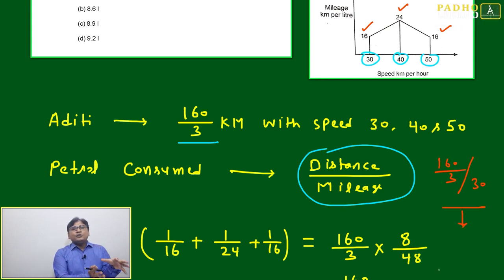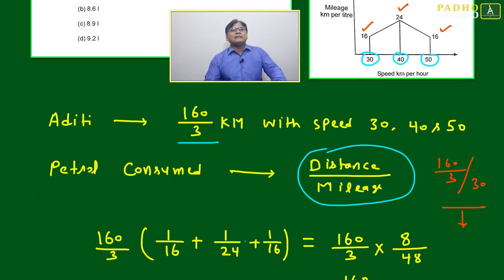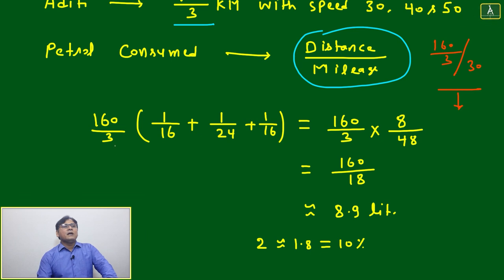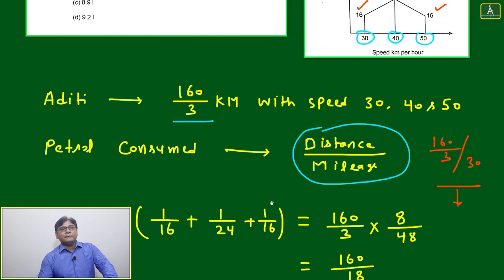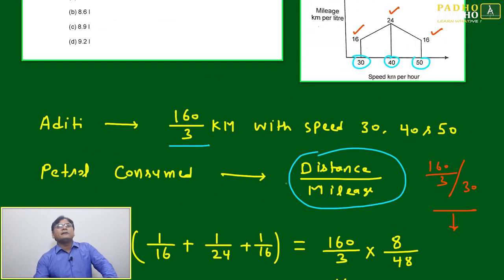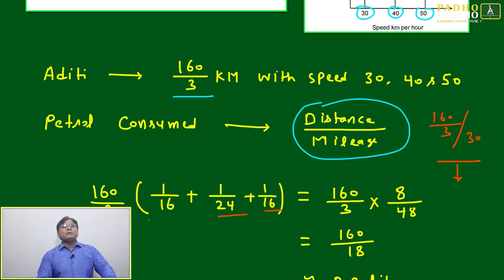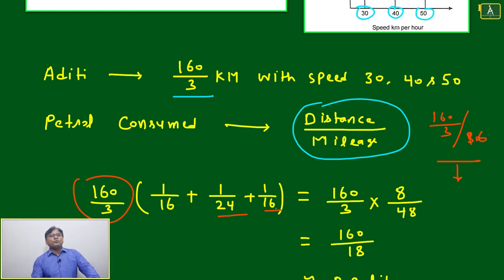Again the same thing we will follow: 160 by 3 divided by 40, and 160 by 3 divided by 50. All things together like this: 160 by 3 times 1 by 16 plus 1 by 24 plus 1 by 16. This is your mileage - 1 by 16, this is 1 by 24, this is 1 by 16. Just you have to divide distance by mileage. This is your distance individually. If you divide 160 by 3 divided by 16, 160 by 3 divided by 24, 160 by 3 divided by 16, if you just take common, it will become 1 by 16.